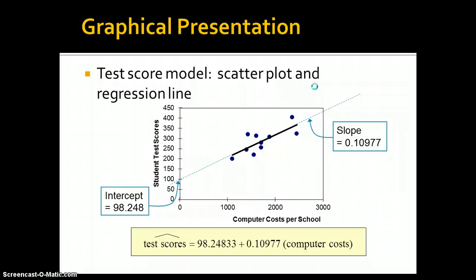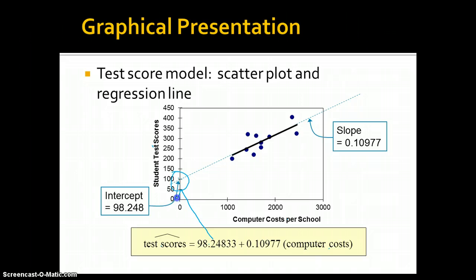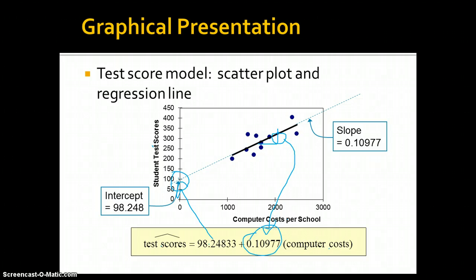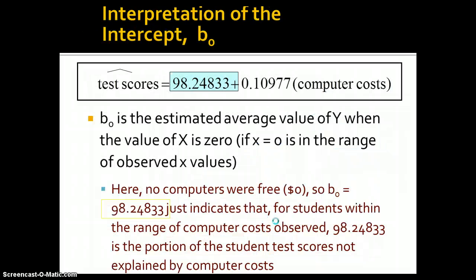If we plot computer cost per school against student test scores, we can see the y-intercept and the slope. One unit increase in computer cost leads to a corresponding increase in test scores — the slope coefficient of 0.10977. So there's not a huge increase in test scores as a result of computer costs. The question is: even though it's a small increase, is it a statistically significant increase? B sub-zero is the estimated average value of y when x is zero.